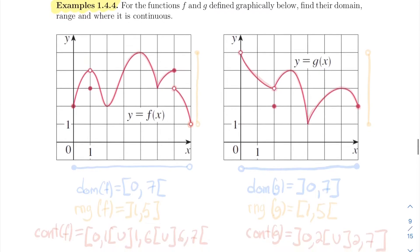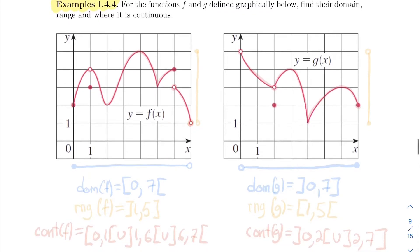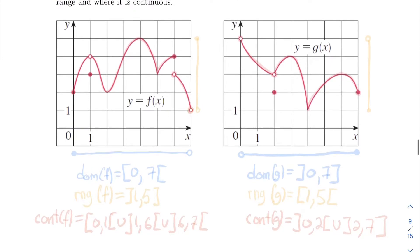Next we have two functions defined visually, and we're going to compute the domain, the range, and the continuous domain of these functions. For the first one, looking at the domain, I can see that the function F is defined everywhere from 0 to 7. So the domain is from 0 to 7, including 0, excluding 7.